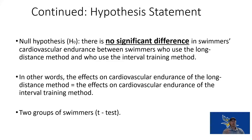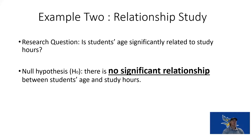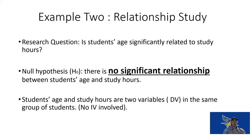We will use a t-test to compare these two groups. Now let's use a relationship study example. Our question: is students' age significantly related to study hours? Our null hypothesis is that there is no significant relationship between student age and study hours. Students' age and study hours are two dependent variables in the same group — there is no independent variable in a relationship study. Two dependent variables and no independent variable means it must be a relationship study.